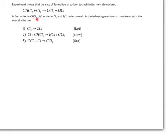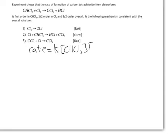We're told that it's first order in CHCl3 and it's one-half order in Cl2. So we can write down the rate law for the reaction based on that information. We know that the rate is equal to K times the concentration of CHCl3 to the first power and the concentration of Cl2 to the one-half power. We're then asked whether the reaction mechanism that we're given is consistent with this rate law. If we're given a reaction mechanism, we can determine what rate law that reaction mechanism would predict, and we need to see if it matches what we were given experimentally.